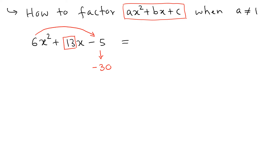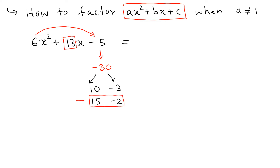Now we're going to think of two factors of negative 30 that add up to 13. We can try 10 and negative 3 — those add up to 7, so that doesn't work. Then we try 15 and negative 2 — when you add those two you get 13, so that is the right choice.